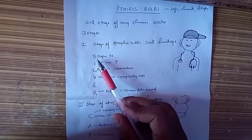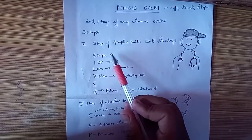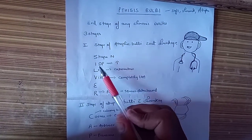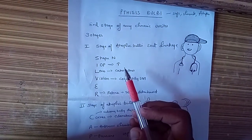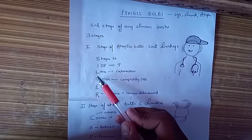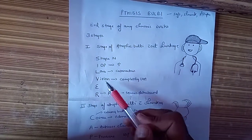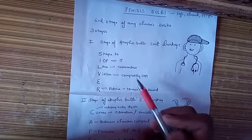SILVER: S is shape of the eye is normal, IOP is increasing because of inflammation, still the eyeball is not shrunken. L is lens will be cataractous, V is vision will be completely lost.